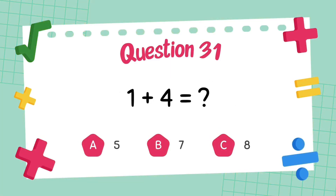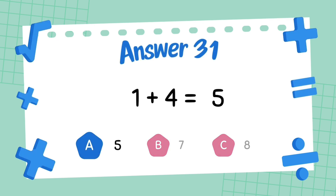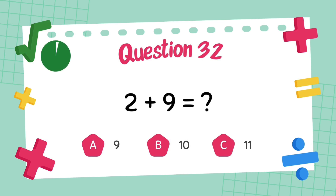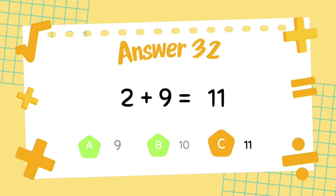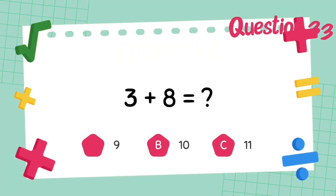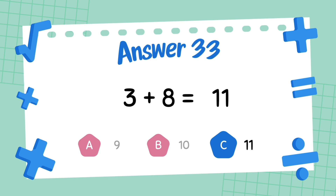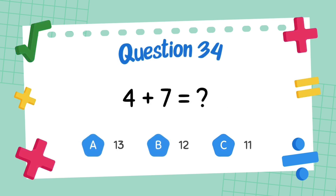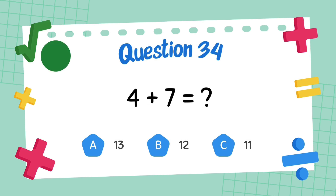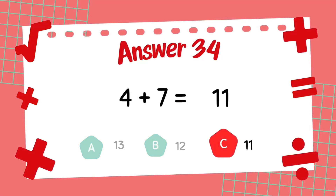What is 1 plus 4? The answer is 5. What is 2 plus 9? The answer is 11. What is 3 plus 8? The answer is 11. What is 4 plus 7? The answer is 11.